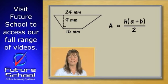We are going to calculate the area of this trapezium. This trapezium has an A side of 24 millimetres, a B side of 16 millimetres and a perpendicular height of 9 millimetres. If we apply the formula,